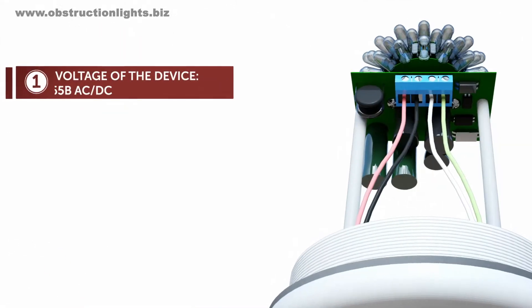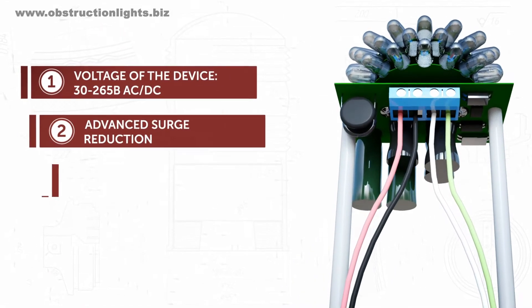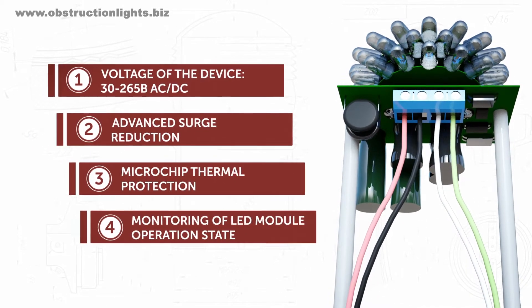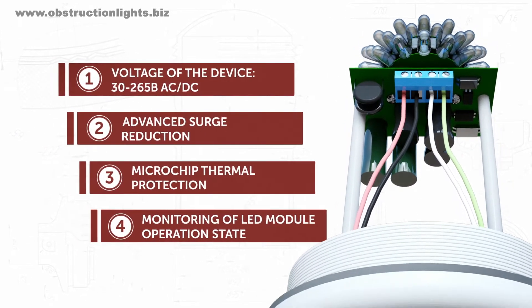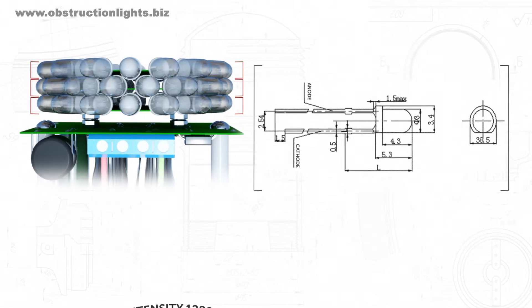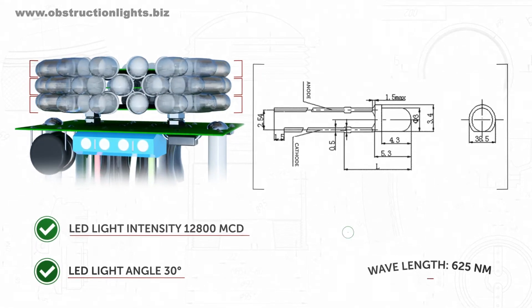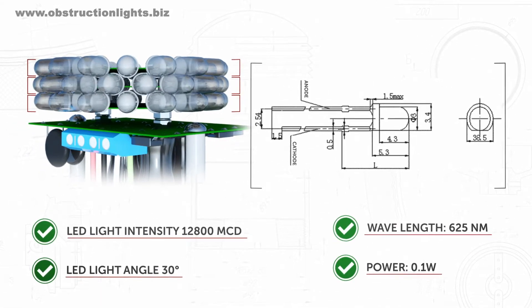The source of light in ZOM48 LED obstruction lights is a stationary LED module with a wide range of power voltage and a monitoring function. 48 high-quality, highly-efficient LEDs are used as light-emitting elements of the LED module.